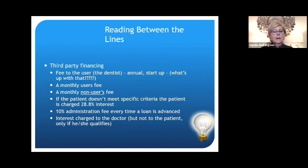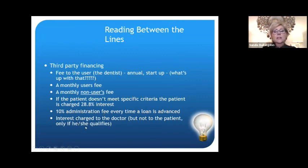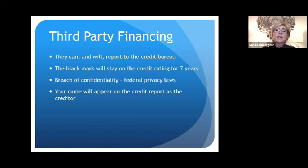I looked into one third-party financing company and found there was an annual startup fee, a monthly non-users fee — so if the doctor didn't use the service, they'd be charged a non-users fee — and a monthly users fee. If the patient doesn't meet specific criteria, they're charged 28.8% interest retroactively. There's a 10% administration fee every time a loan is advanced, and interest is charged to the doctor, not to the patient, only if they qualify. They can and will report to the credit bureau because they are a bank — the black mark stays on the patient's credit rating for seven years, and your name stays on that report as well, which in some areas is considered a breach of confidentiality violating federal privacy laws.